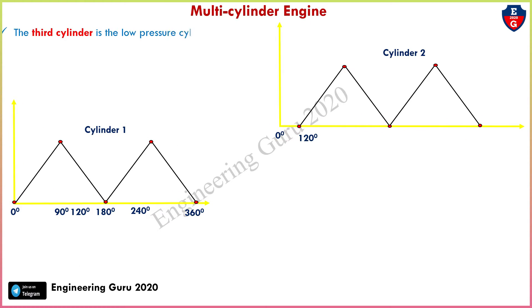The third cylinder is the low-pressure cylinder. As noted, the first cylinder starts at zero degrees and the second at 120 degrees.